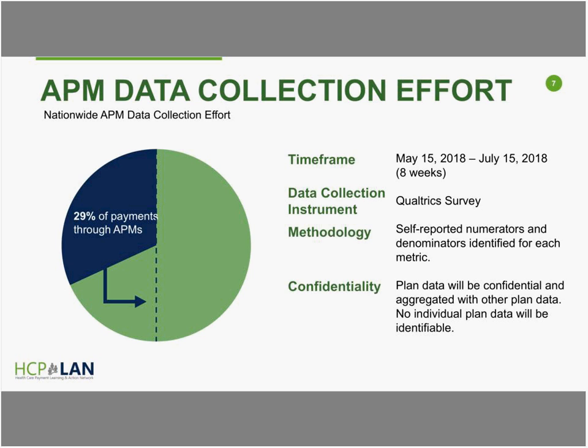Here you can see an overview of the measurement process. Data collection will run from the middle of May through the middle of July, and we'll be using a Qualtrics survey tool — an online tool. Plans will self-report numerator and denominator data in specified fields. Very importantly, the LAN guarantees that individual plan data will be kept confidential, and all plan data are aggregated for a final result.